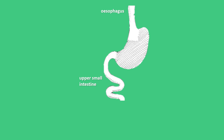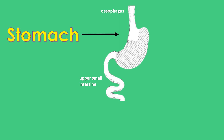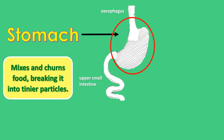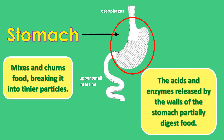The stomach is a J-shaped, pouch-like organ. The stomach acts like a mixer that further mixes and churns food, breaking it into tinier particles. The acids and enzymes released by the walls of the stomach partially digest food.